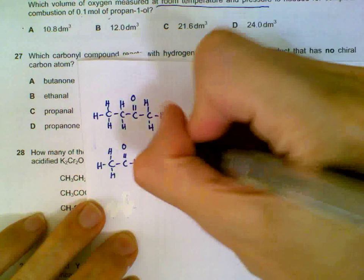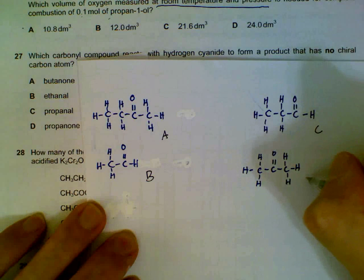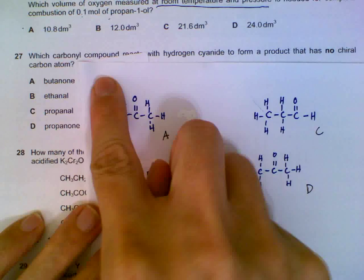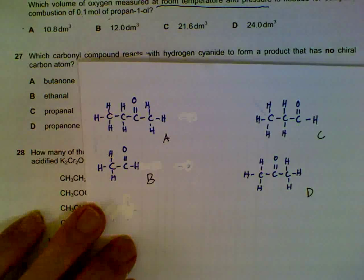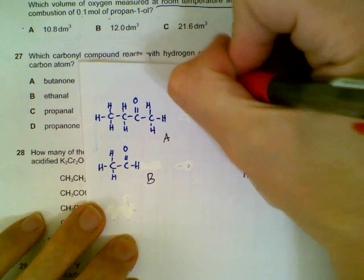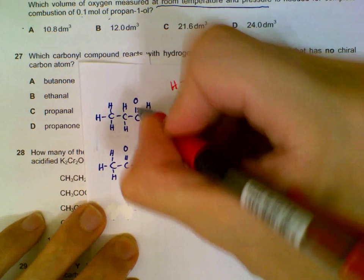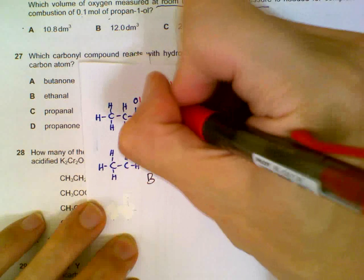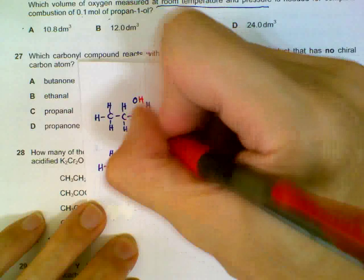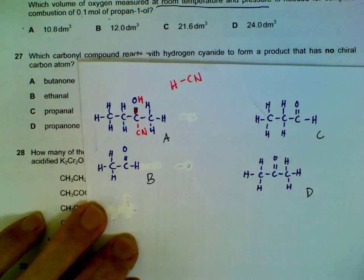We have options A, B, C — propanol — and propanone. Hydrogen cyanide, HCN, reacts by adding across the double bond: the H attaches to the oxygen to form a single bond, and the CN portion attaches to the carbon.